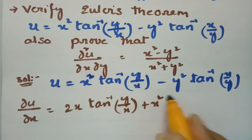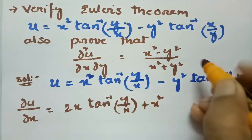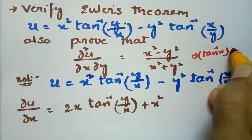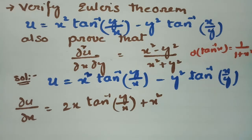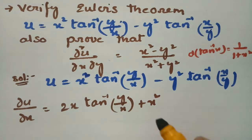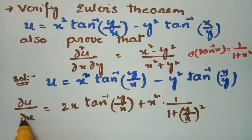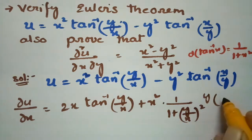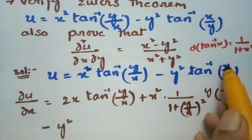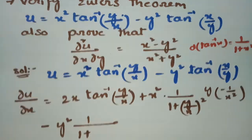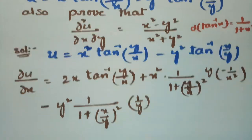Next, leaving x square and making a derivative with respect to x: the derivative of tan inverse of x is 1 by 1 plus x square. So here it is 1 by 1 plus y by x whole square, and derivative of y by x with respect to x gives minus y by x square. For the second term, y square is constant, and derivative of tan inverse of x by y with respect to x is 1 by 1 plus x by y whole square, times 1 by y.